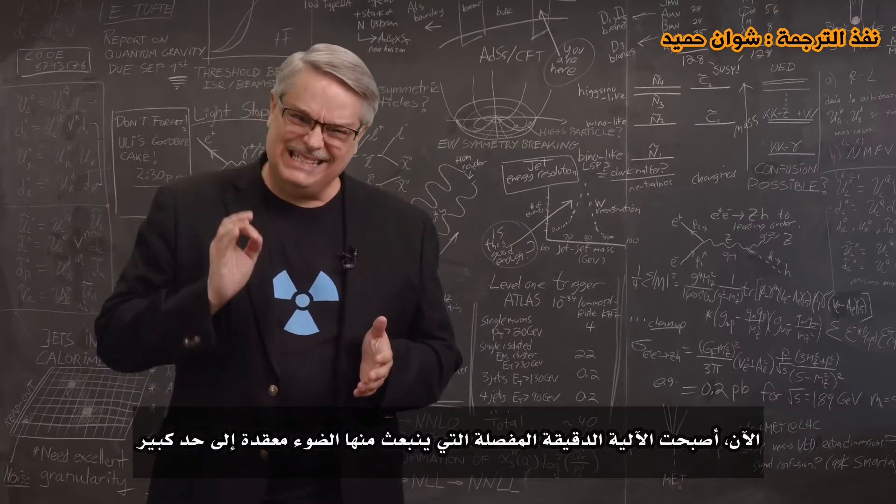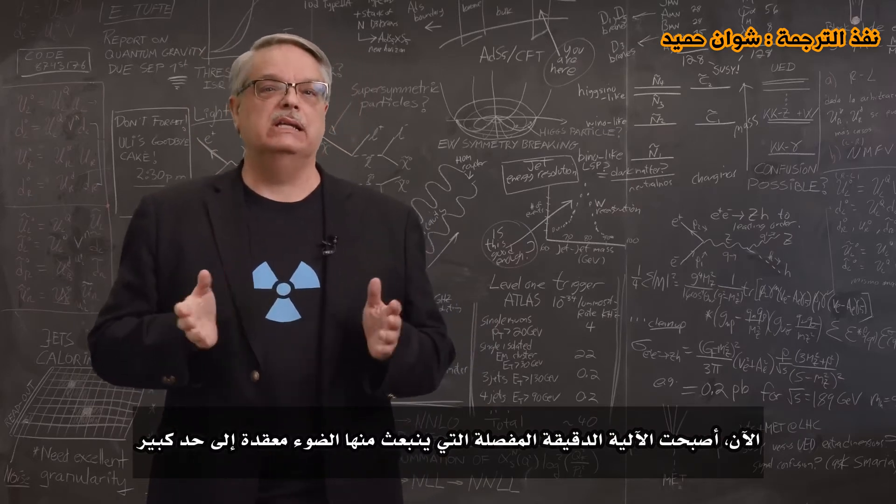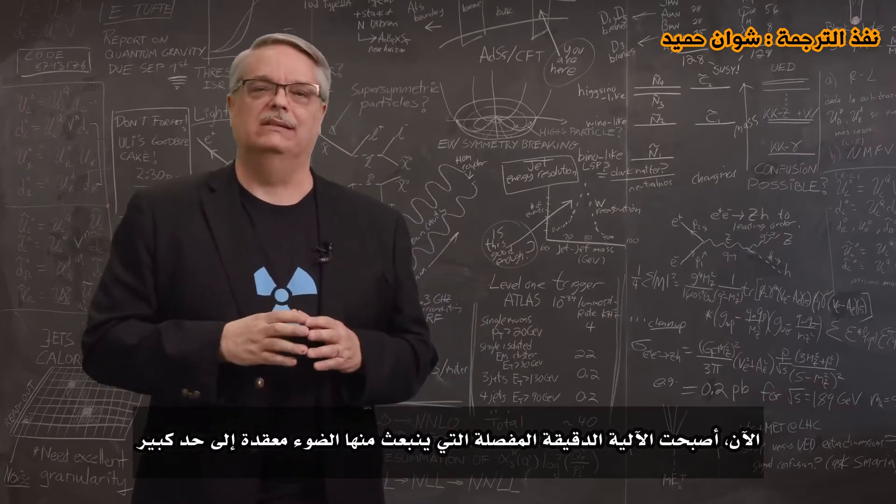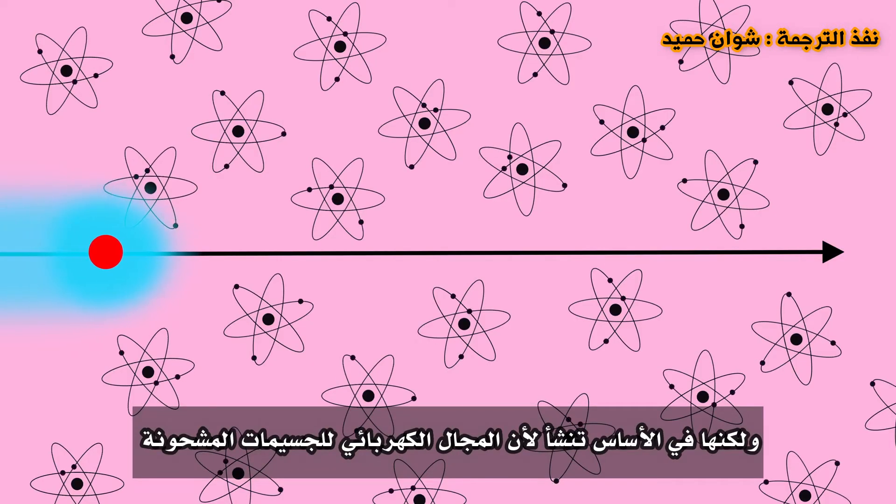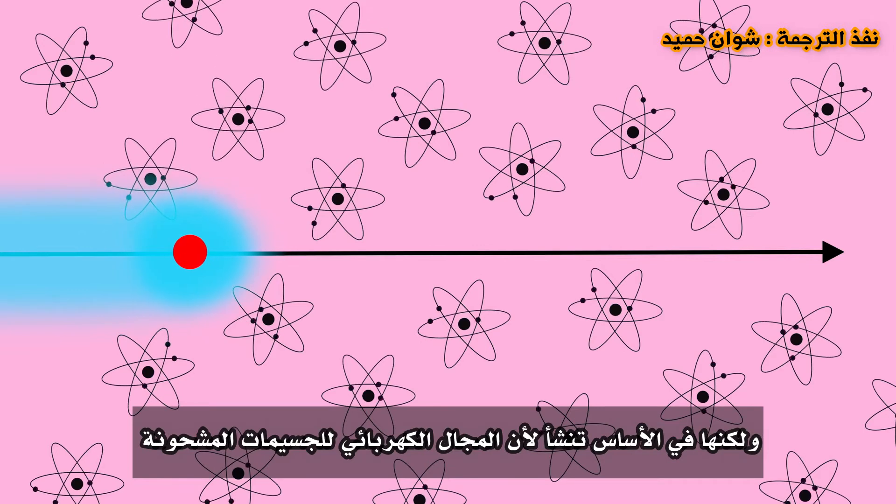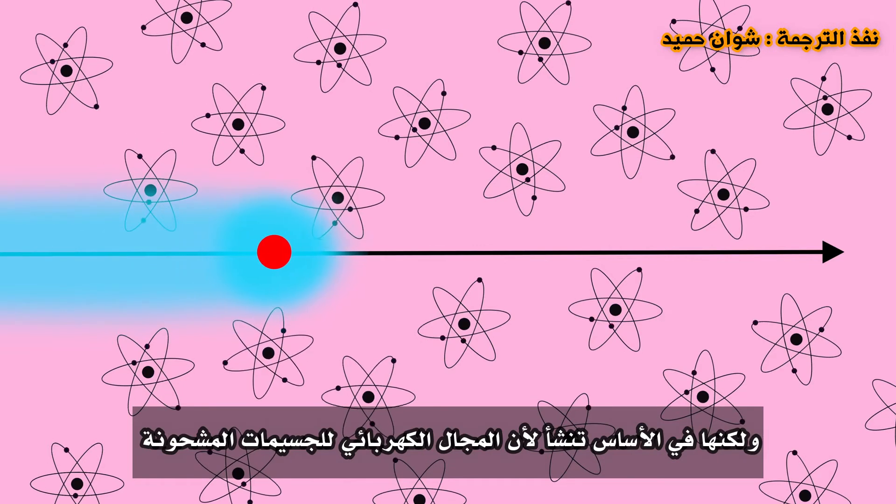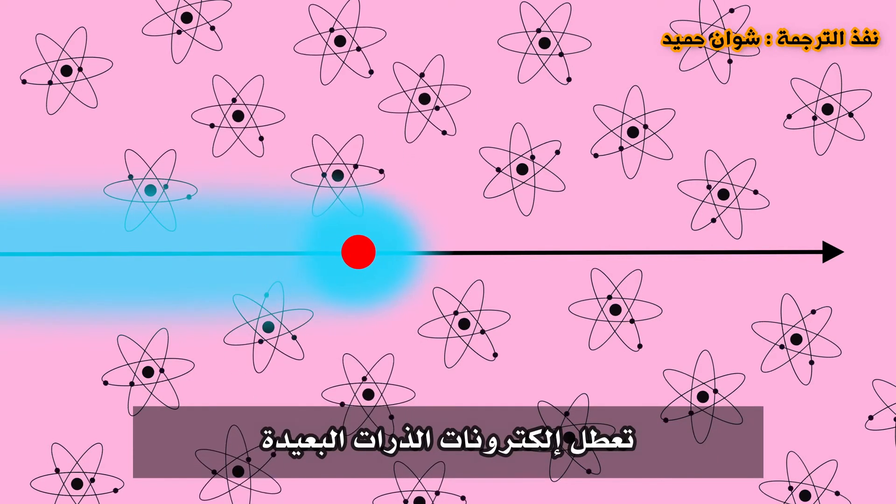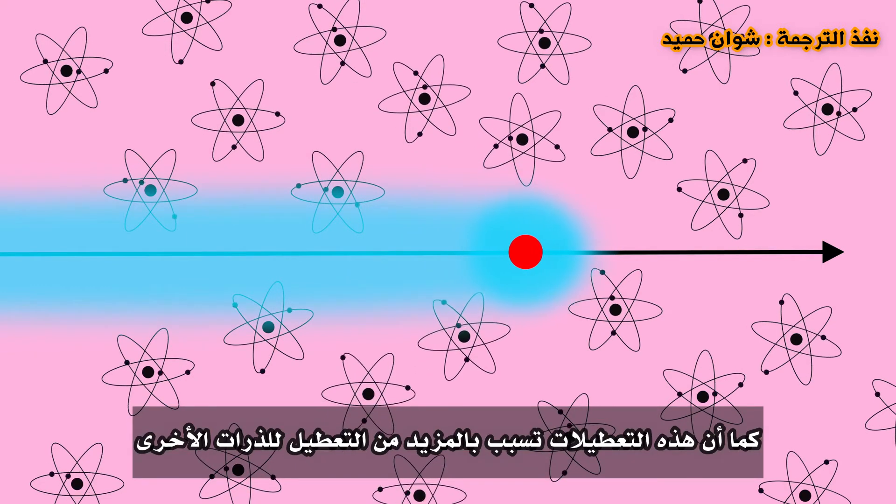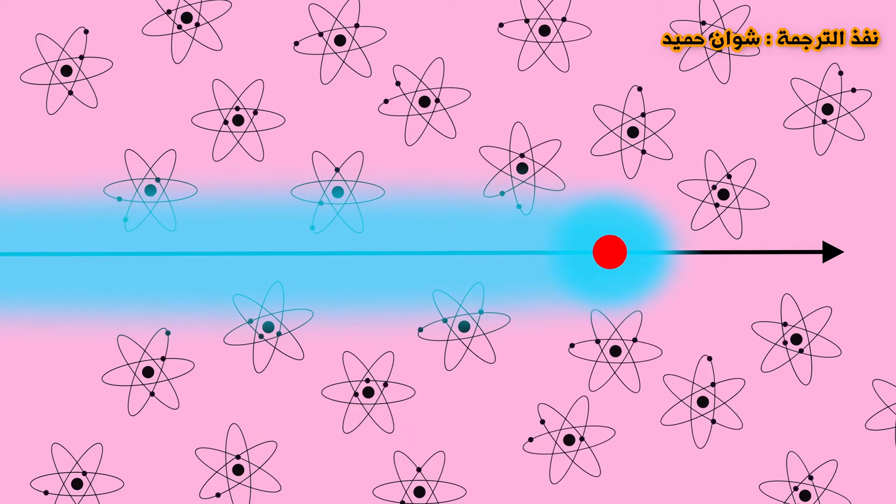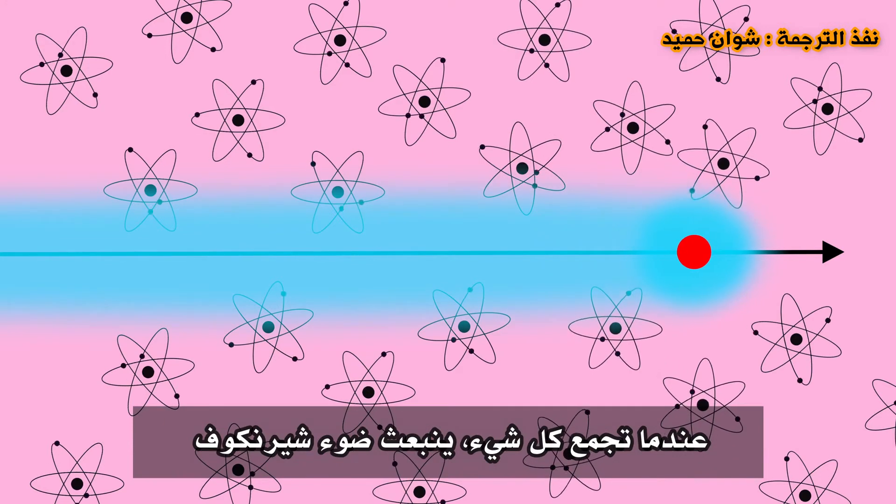Now, the exact detailed mechanism whereby light is emitted is quite complicated. Maybe I'll describe it in a future video. But basically, it's created because the electric field of the charged particle disrupts the electrons of distant atoms and those disruptions cause even more disruptions to other atoms. When you add up everything, Cherenkov light is emitted, but only if the charged particle is traveling faster than light.